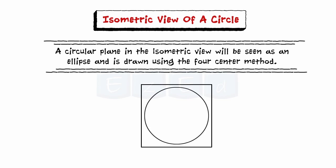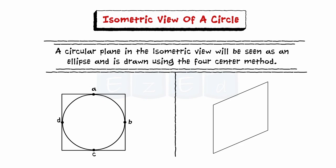The first step encloses the circle in a square plane touching it at points A, B, C and D. Then draw the isometric view of the square plane as shown. For drawing the ellipse first draw the center lines and mark the points A, B, C, D as shown.